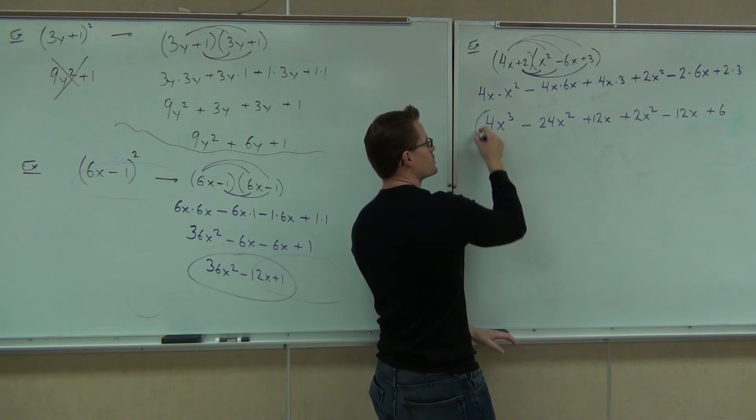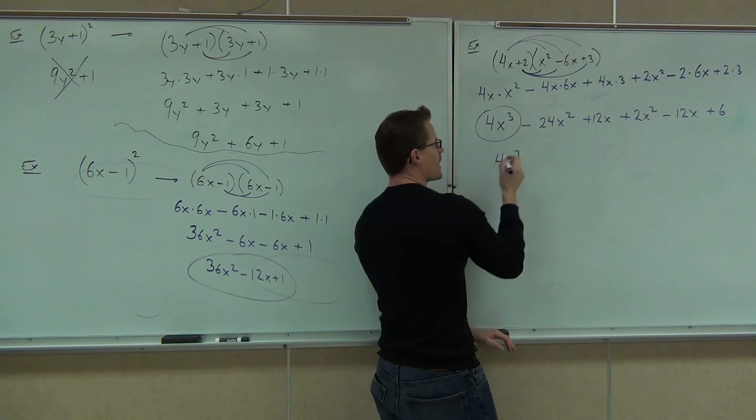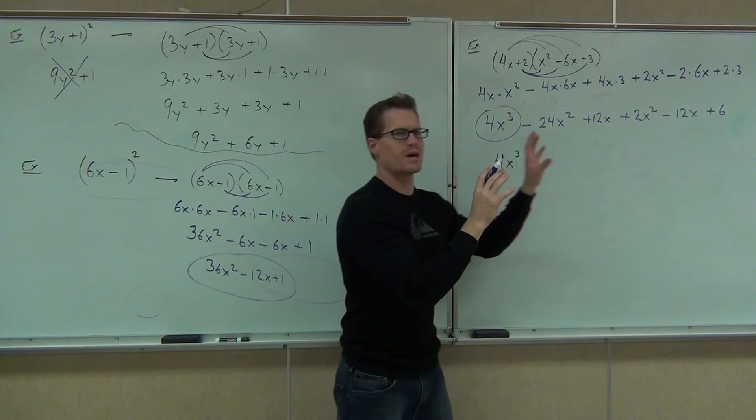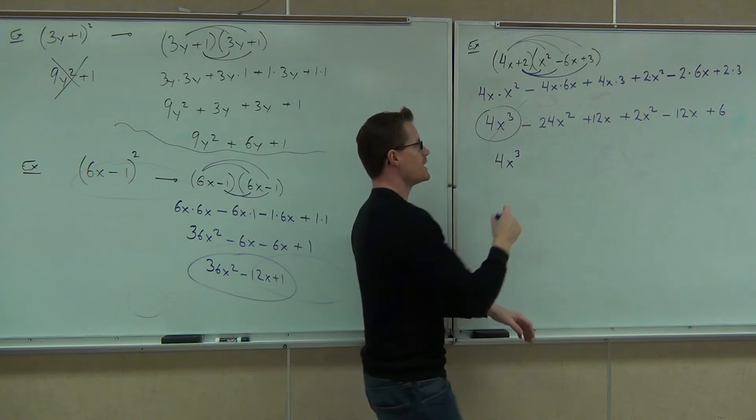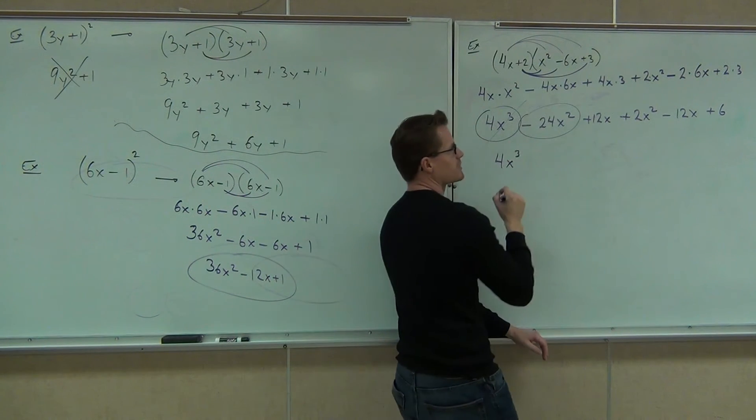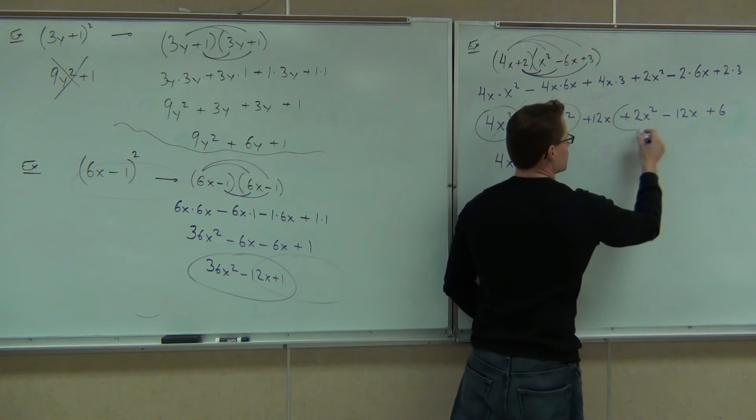Do I have any like terms of 4x³, folks? No. So I'm going to start there. Remember, I like to start with the bigger exponents and work my way down. It's got to be in order. Next, I check for any other x². Do I have any other x²? How much does that make?